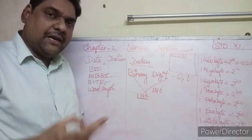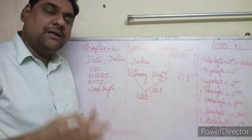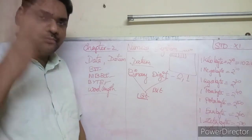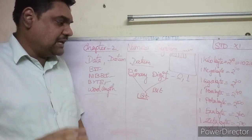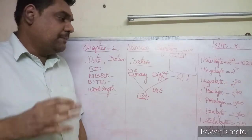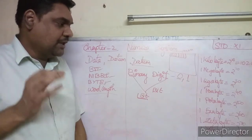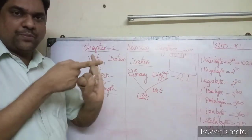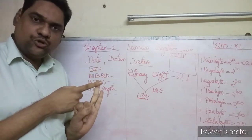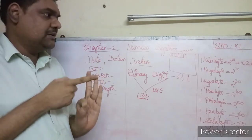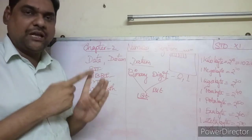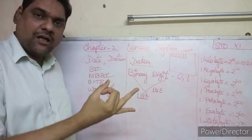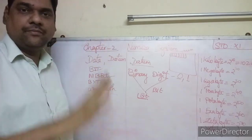Remember the order as a rhyme: kilo, mega, giga, tera — then peta, exa, zeta, yota. Kilo is 2 power 10, mega is 2 power 20, giga is 2 power 30, tera is 2 power 40, peta is 2 power 50, exa is 2 power 60, zeta is 2 power 70, yota is 2 power 80.